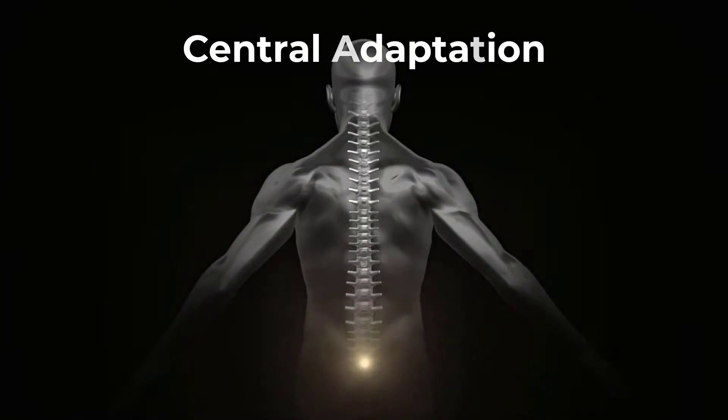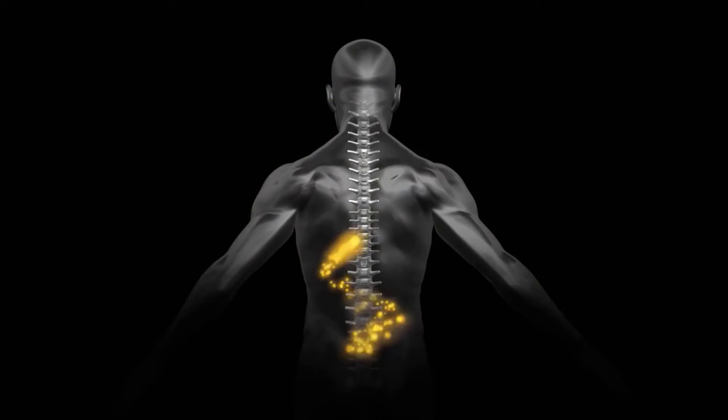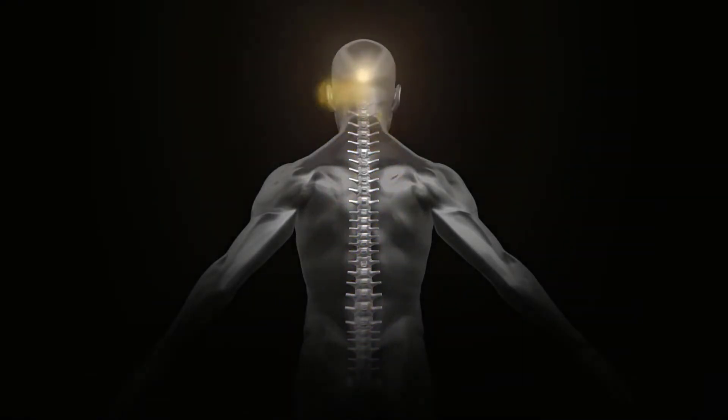Central adaptation occurs at the subconscious level. Central adaptation restricts the amount of information arriving at the cerebral cortex.